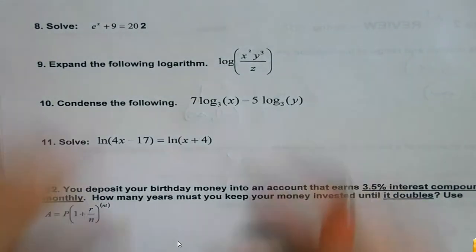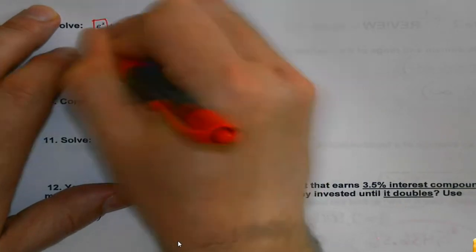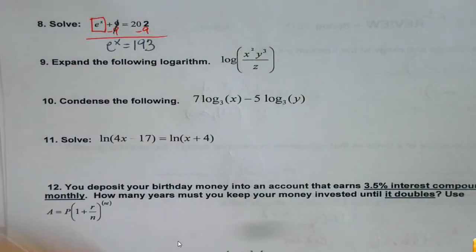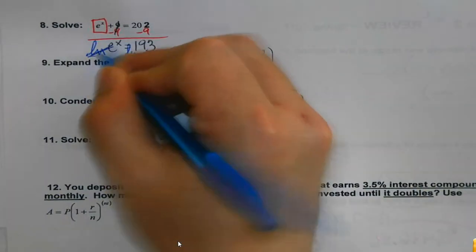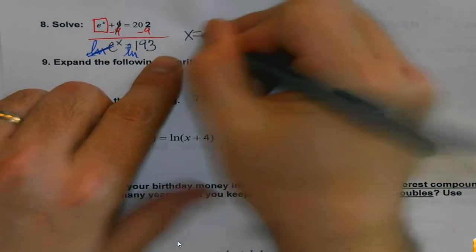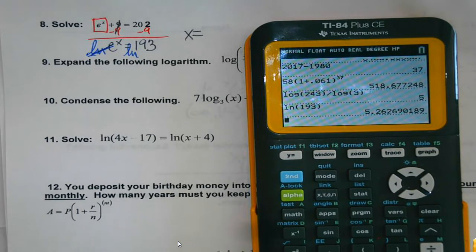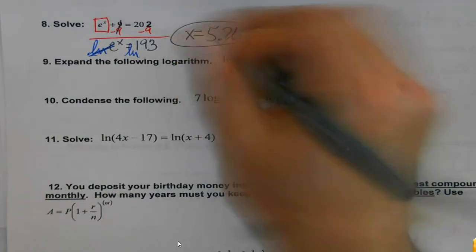Solve. Whenever we're solving, whichever term has x has to be isolated first. So I've got to get the 9 out first. Now I need to do the inverse of e. The inverse of e is natural log, or ln — that button about two-thirds of the way down on the left. Since ln and e are inverses they cancel out, and I type in the natural log of 193 to get approximately 5.26.